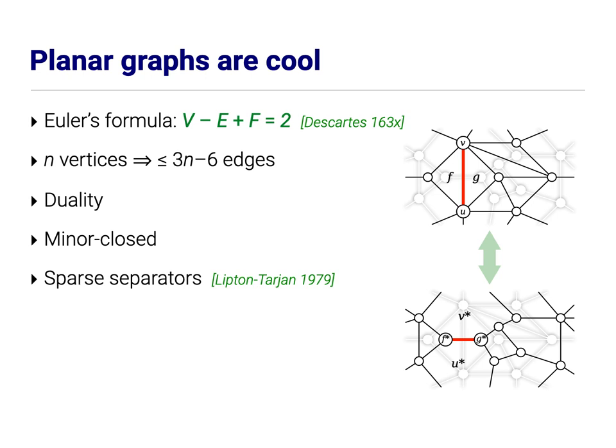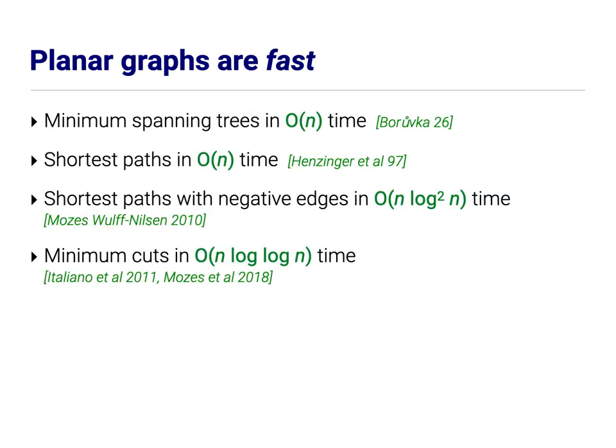And these combinatorial properties eventually imply a bunch of faster algorithms for classical problems where because of planarity, you can make the algorithm either faster or simpler than for general graphs. It's possible to compute minimum spanning trees in linear time using the classical algorithm by Borůvka just because planar graphs are sparse and minor closed. Recursive application of separators allows you to compute shortest paths in planar graphs in linear time. And in fact, even if you've got negative edge weights, you can still compute shortest paths in near linear time. And as another example with different divide and conquer strategies, it's possible to compute minimum cuts in planar flow networks in near linear time, this time with a double log.